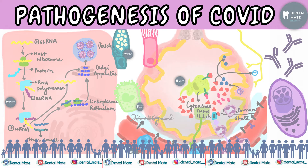Hello everyone, welcome to DentalMate. Today in this video we will be discussing the pathogenesis of SARS-CoV-2, answering questions like: why does SARS-CoV-2 spread so effectively? Why does COVID-19 manifest as pneumonia? How does it enter the human body, and why is 14 days of quarantine advised? Why is SARS-CoV-2 a systemic disease, how does the human body fight back, and what is the cytokine storm? So let's get started.